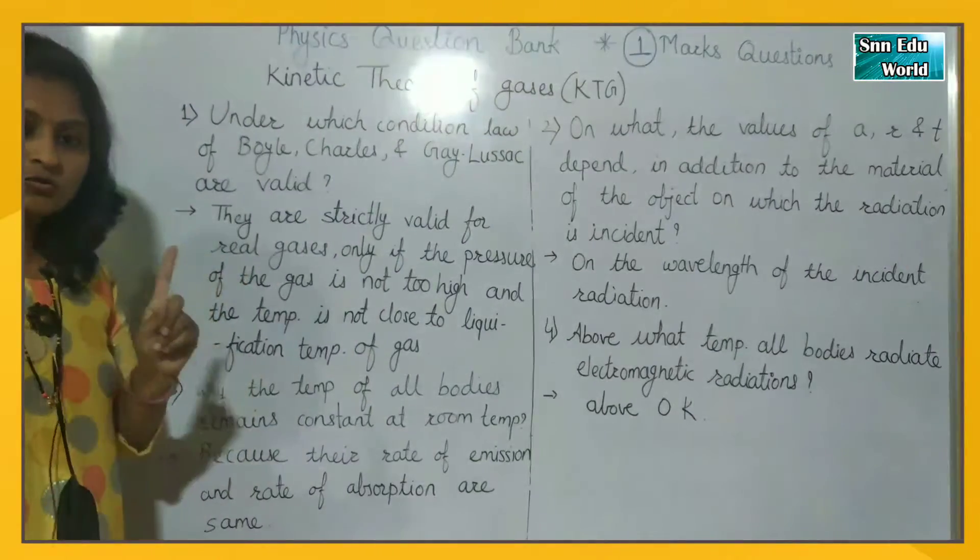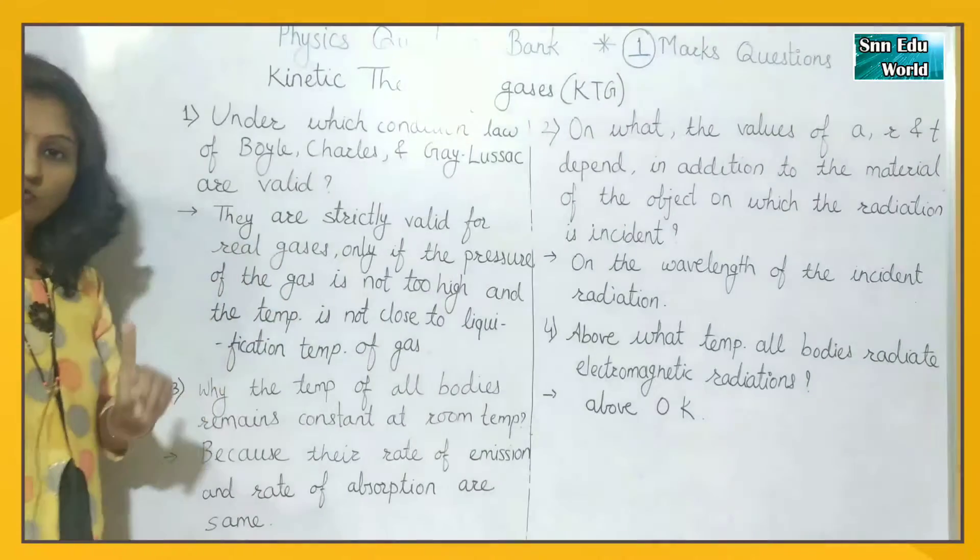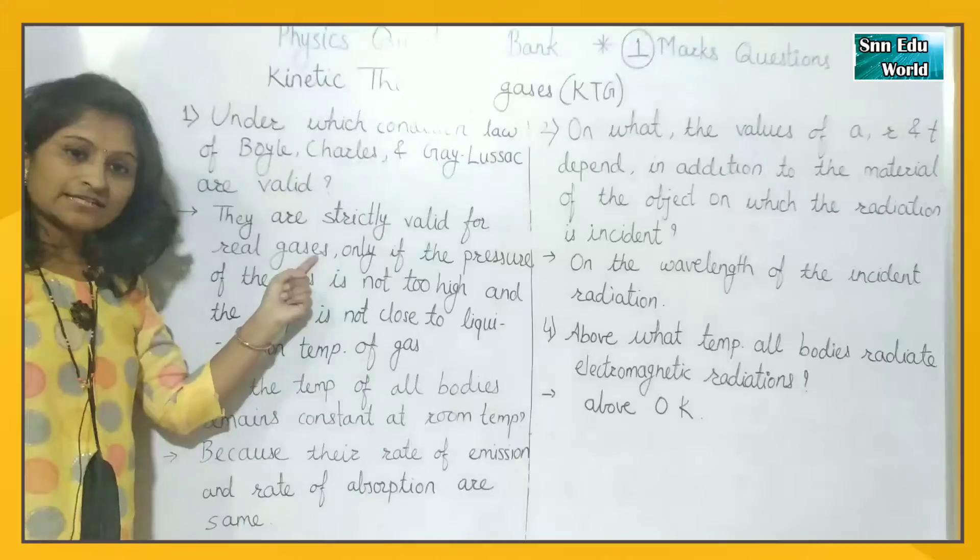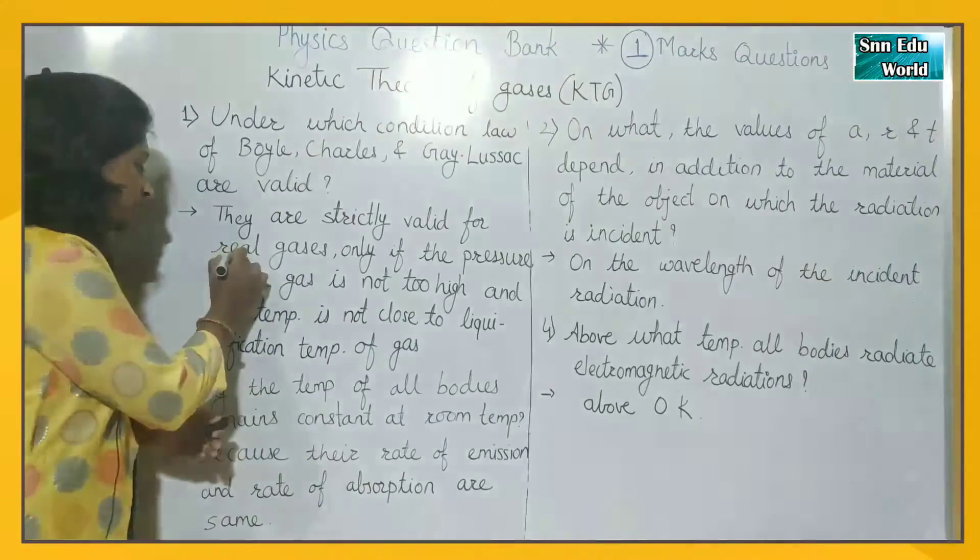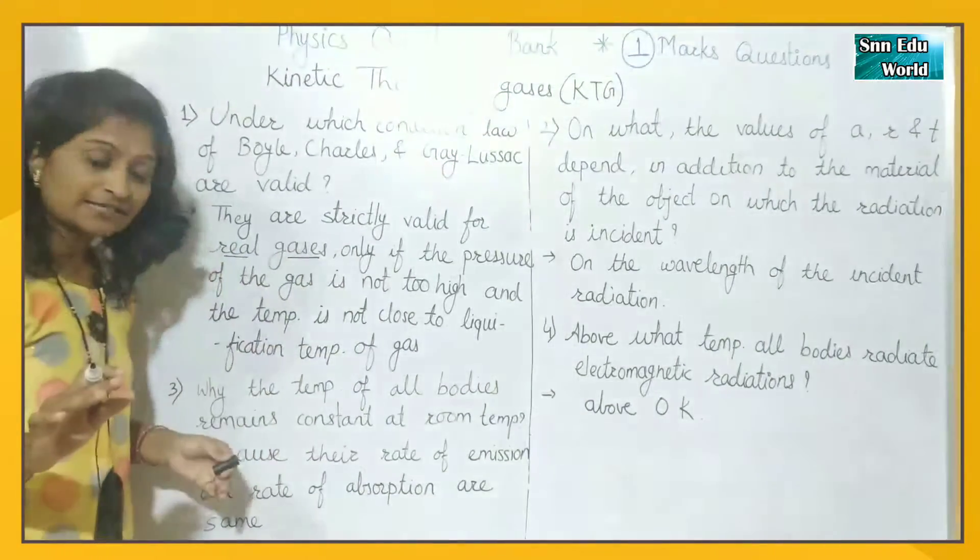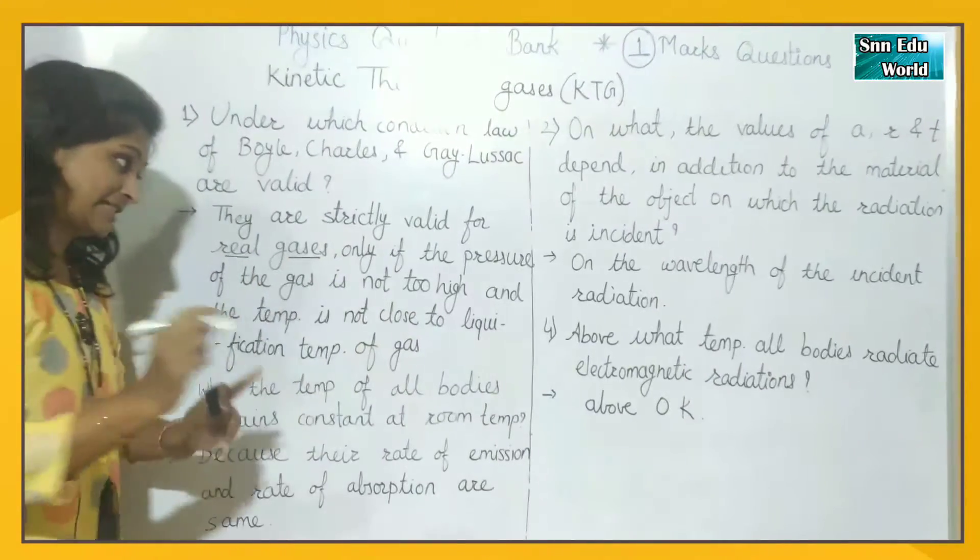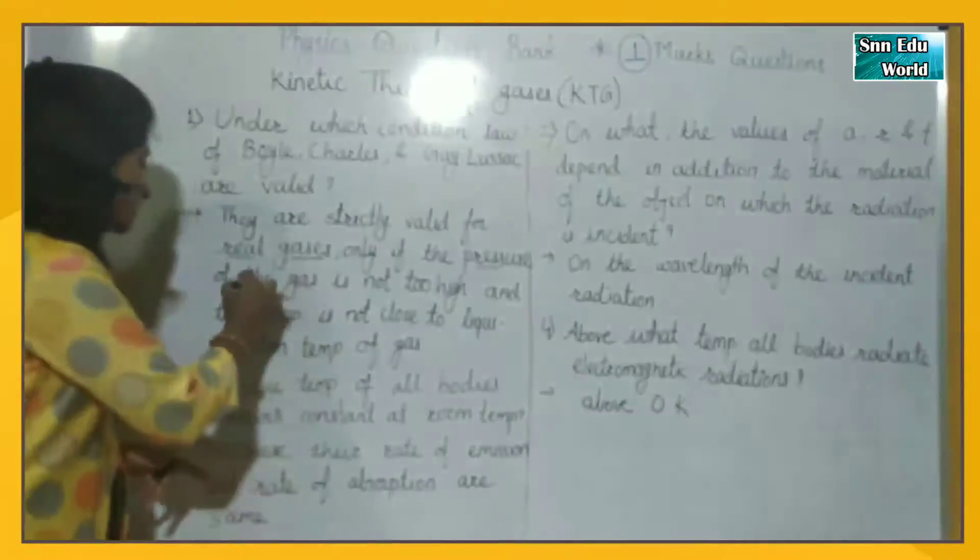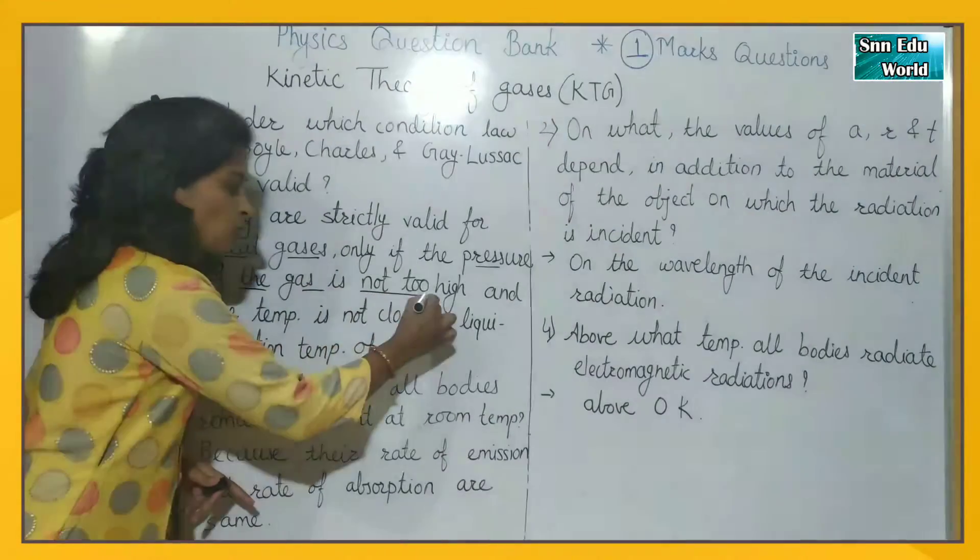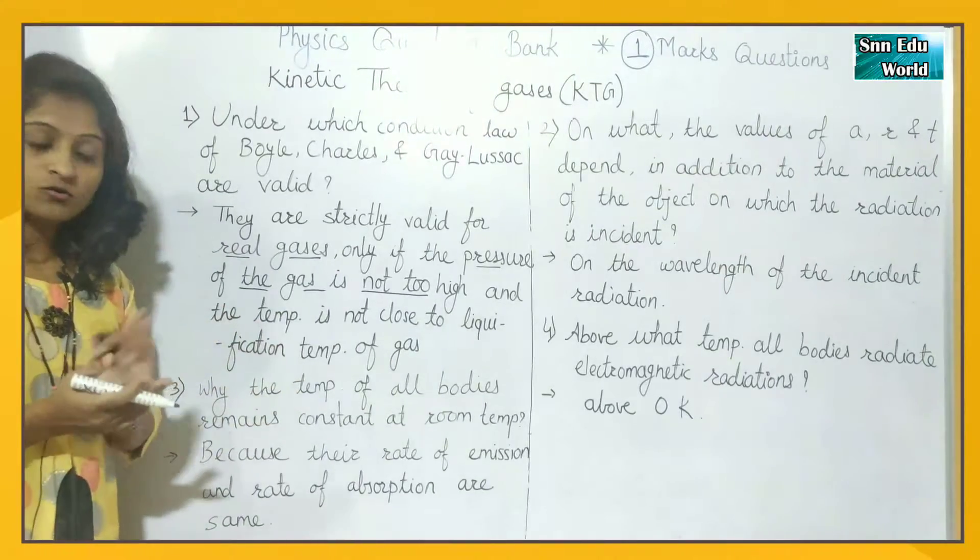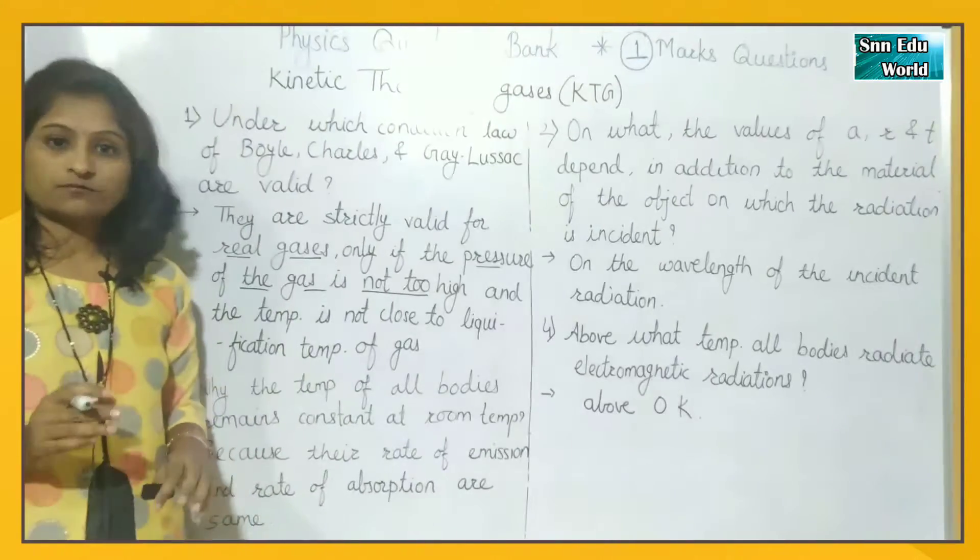This is for 1 mark, so you can write 1 or 2 conditions. So what are the conditions? They are strictly valid for real gases. This is the first condition, that they are valid for the real gases only if the pressure of the gas is not too high. This is the second condition, pressure of the gas is not too high.